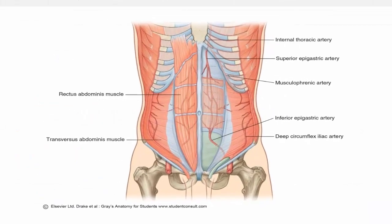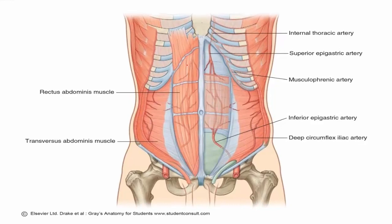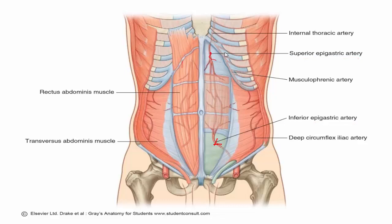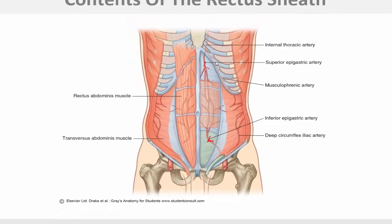This figure shows the contents of the rectus sheath containing the rectus abdominis muscle. Between the muscle and the posterior wall of the rectus sheath there is the inferior epigastric artery, and the superior epigastric artery is also present, in addition to other structures.